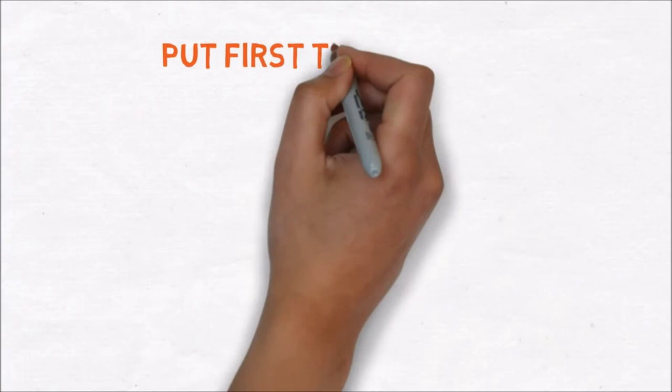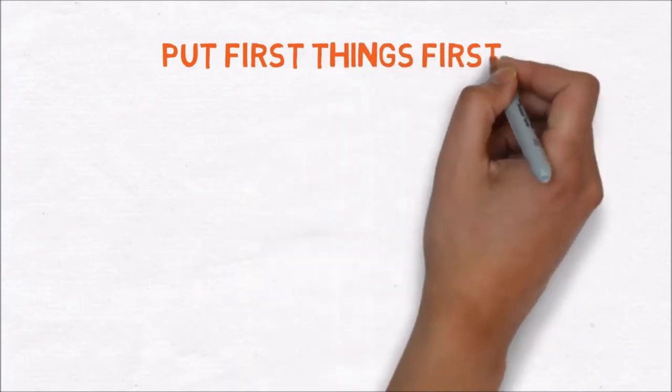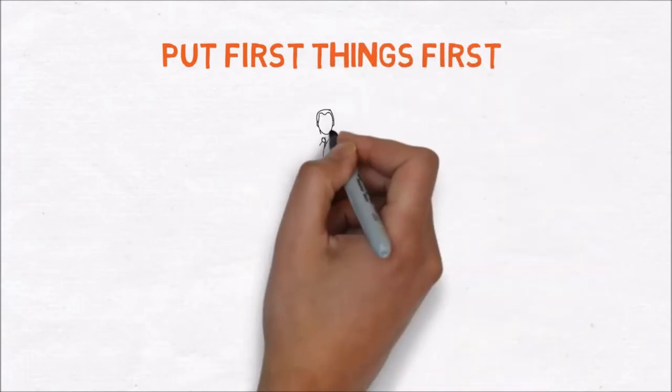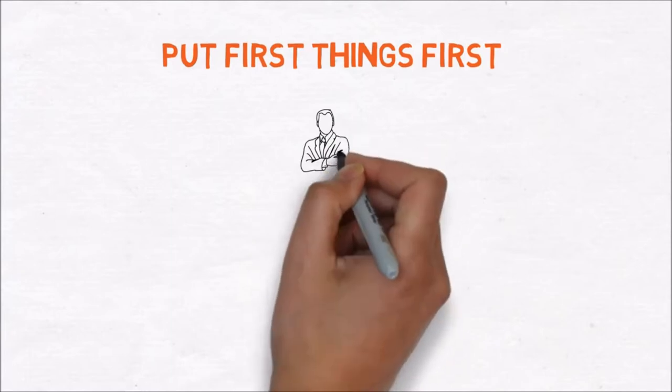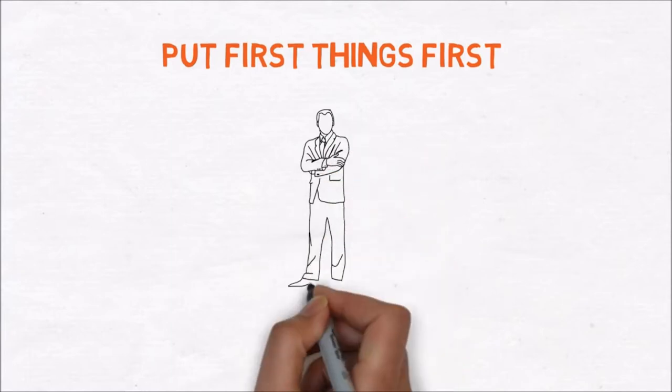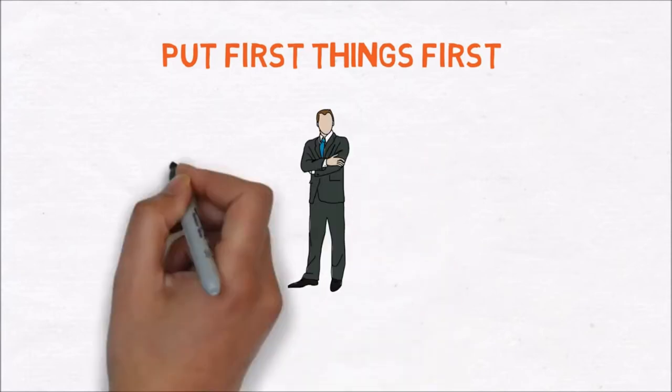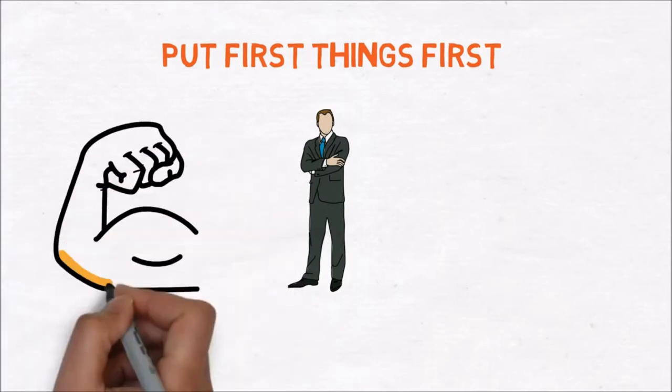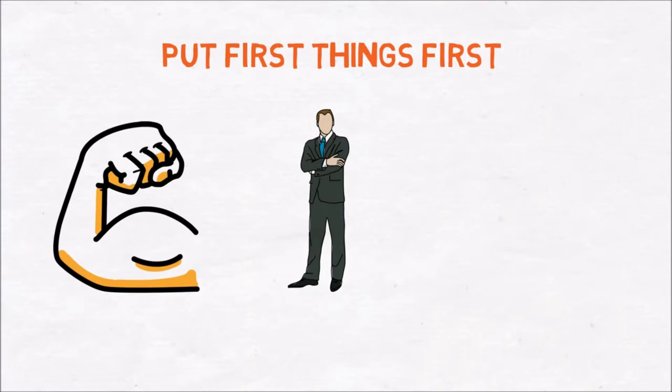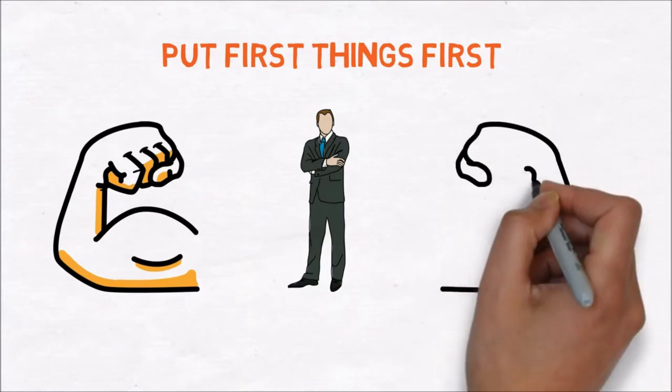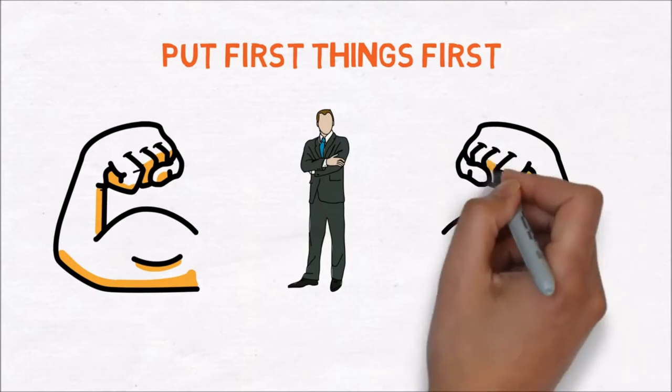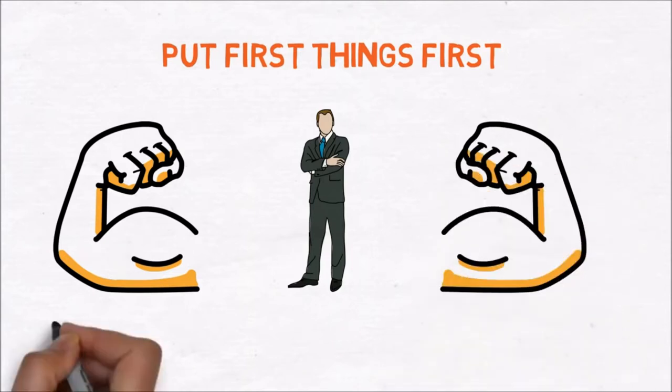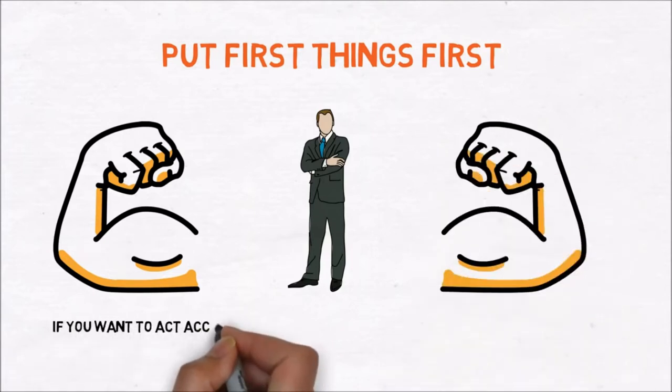The third lesson is to put first things first. In lesson 2 we talked about creating a vision and deciding which things are really important for you. By putting first things first you can manage yourself effectively. You must have the discipline to prioritize your daily actions based on the things that you find important. You need to have a lot of willpower to stay on track because sometimes you have to do things that you don't want to.